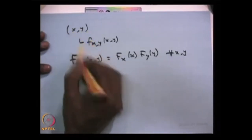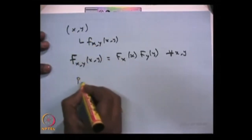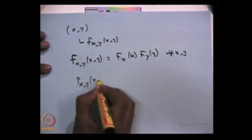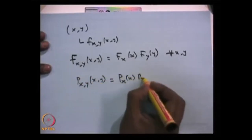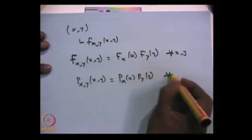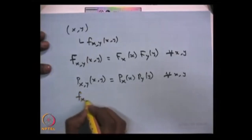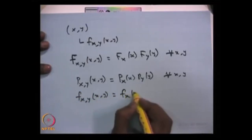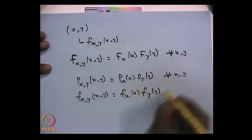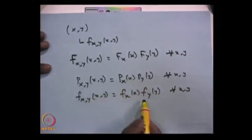If both random variables are discrete, then you can come down from the CDF to the joint probability mass function. The joint probability mass function can be written as the product of the individual probability mass functions for all x, y. If both random variables are continuous, then the joint probability density function will be the product of the individual probability density functions. Based on whether the random variables are discrete or continuous, you can cross-check whether this property is satisfied.